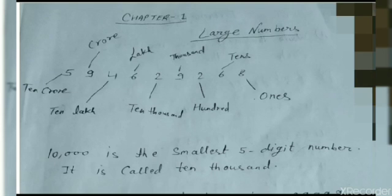So, what do we think? 8 is in the ones place. 6 is in the tens place. 2 is in the hundreds place. 9 is in the thousands place. 2 is in the ten-thousands place. 9, 6, 4, and 5 continue in higher place values. We need to know ones, tens, hundreds, and thousands.